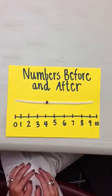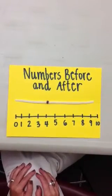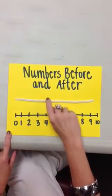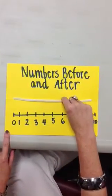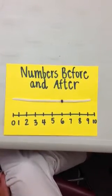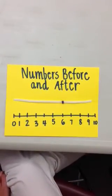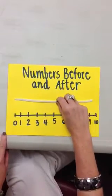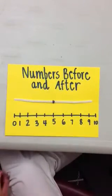Lucy, show me the number 6 on the number line. This is the number 6. Now show me the number that comes before 6. The number that comes before 6 is 5. Good job.